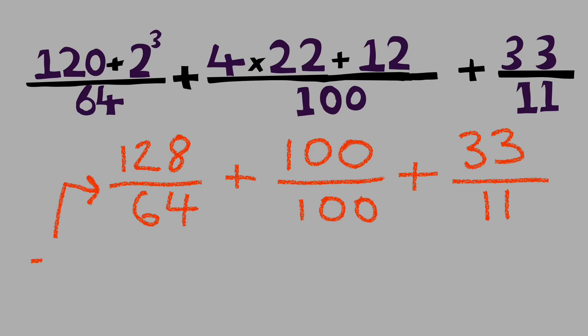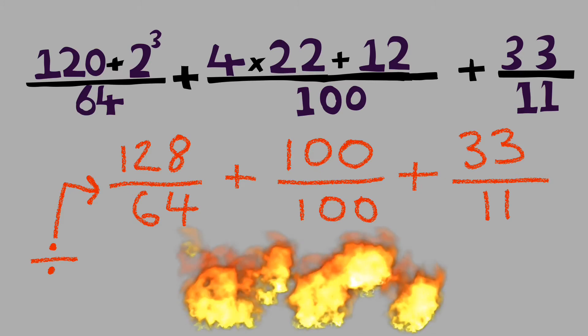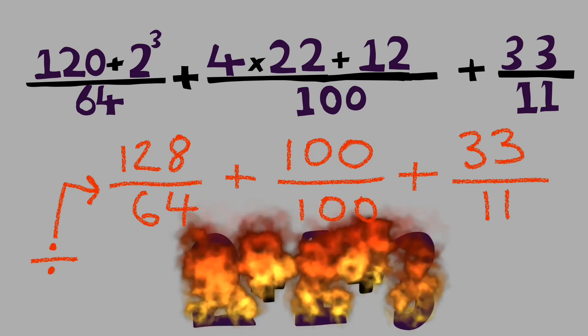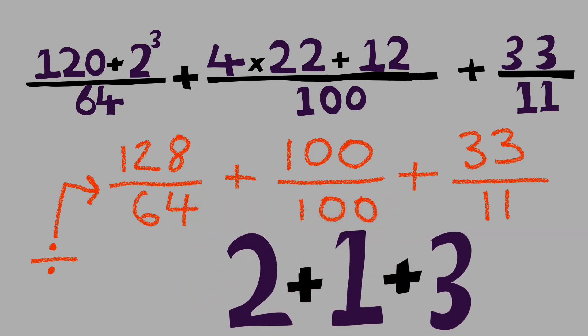It means 128 divided by 64, 100 divided by 100. That makes everything rather simple in the end. So 128 divided by 64, well that's 2. 100 divided by 100, that's 1. 33 divided by 11, well that's 3. So we end up with 2 plus 1 plus 3, and that's going to give you 6.